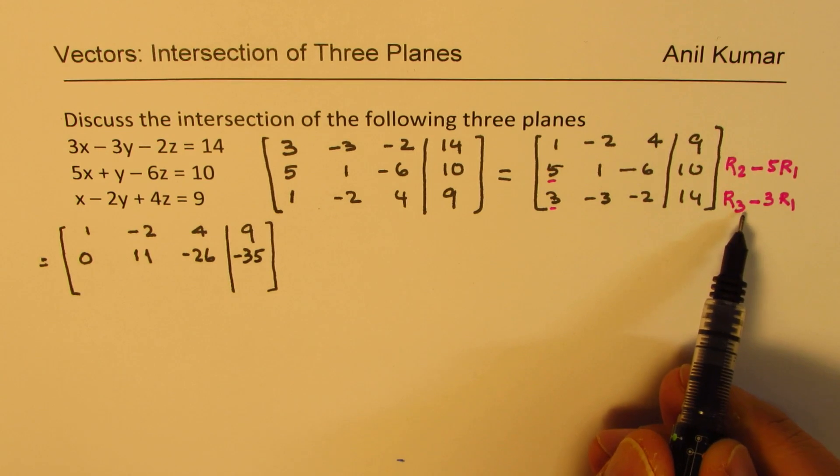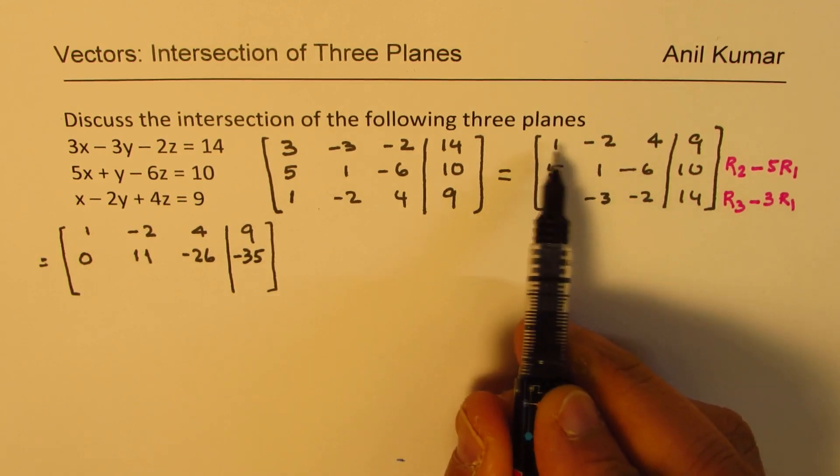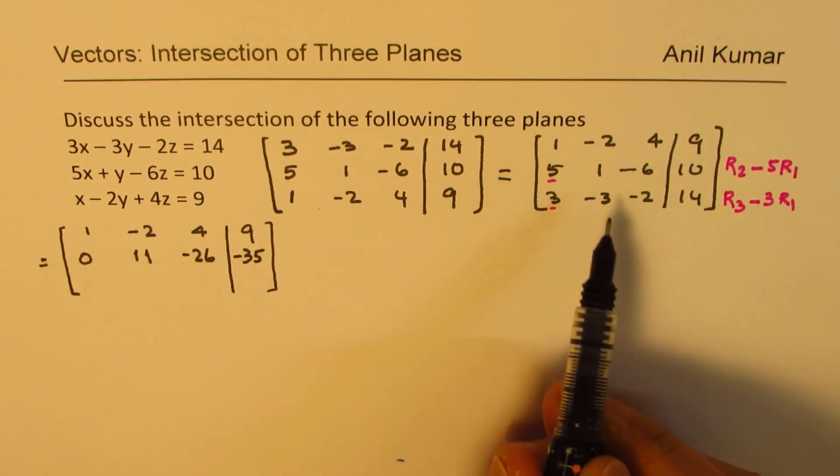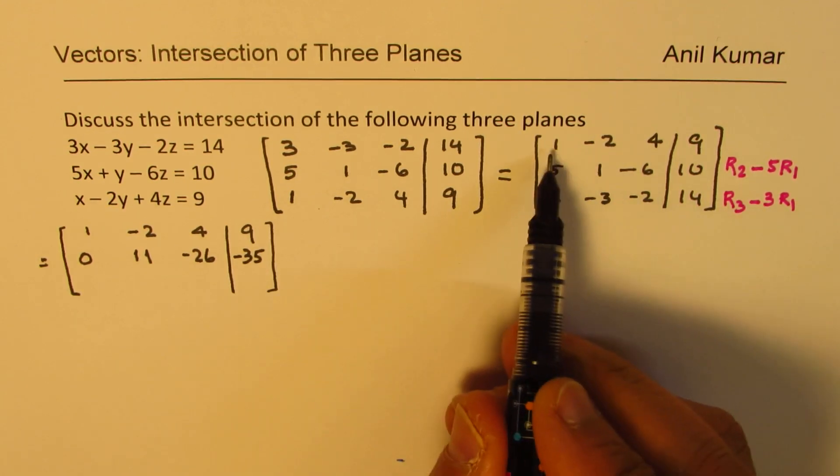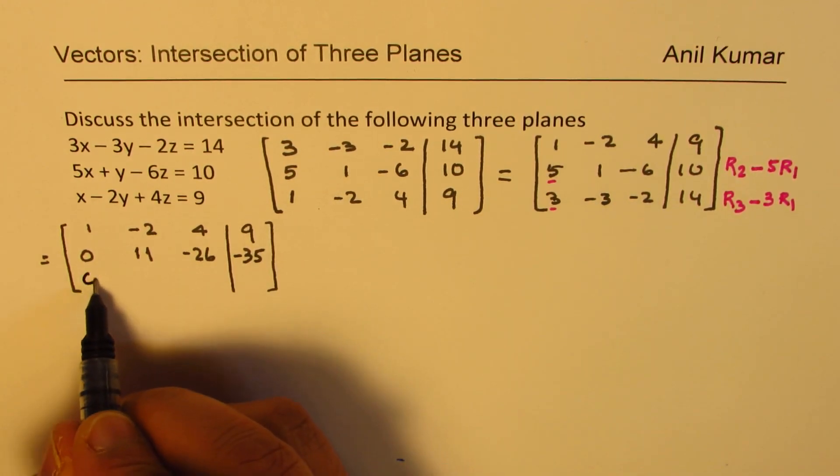Now the third row, we'll do this operation, 3 times R1. So we have to take away from each, 3 times 1 will give us 0. That is what we wanted. 3 times 2 is 6, minus 6.